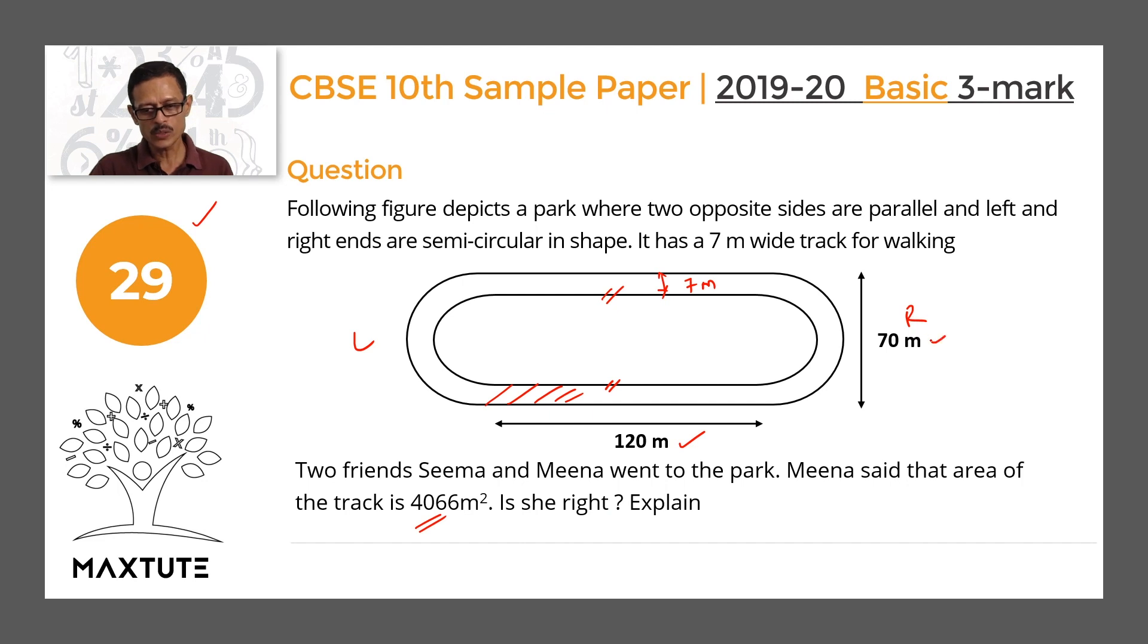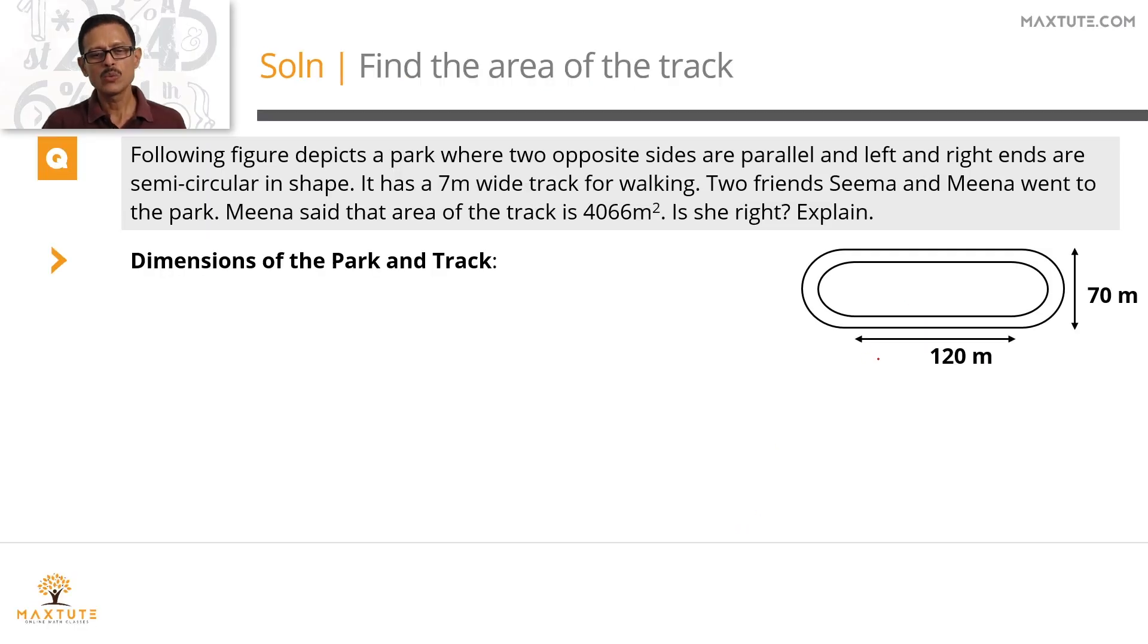We have two data points: 120m and 70m. What is this 120m? I am going to divide this entire walking track into four parts. Part 1 is a straight line part. Part 2 is also a straight line part. So these two parts, the length of each of these parts is 120m. The width is the width of the track which is equal to 7m.